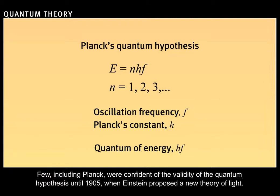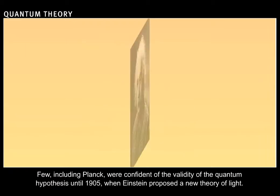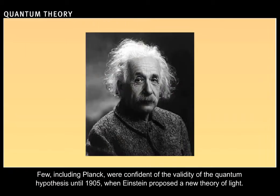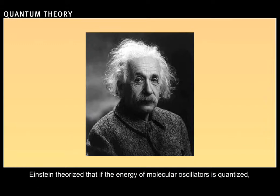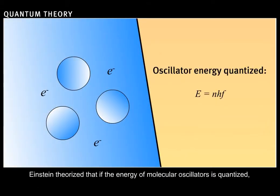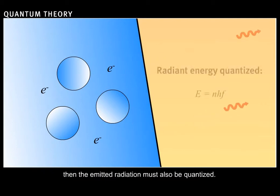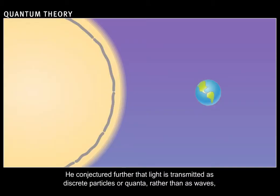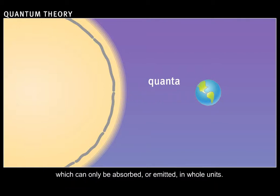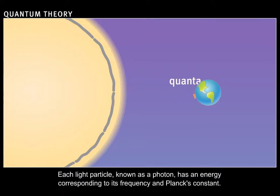Few, including Planck, were confident of the validity of the quantum hypothesis until 1905, when Einstein proposed a new theory of light. Einstein theorized that if the energy of molecular oscillators is quantized, then the emitted radiation must also be quantized. He conjectured further that light is transmitted as discrete particles, or quanta, rather than as waves, which can only be absorbed or emitted in whole units. Each light particle, known as a photon, has an energy corresponding to its frequency and Planck's constant.